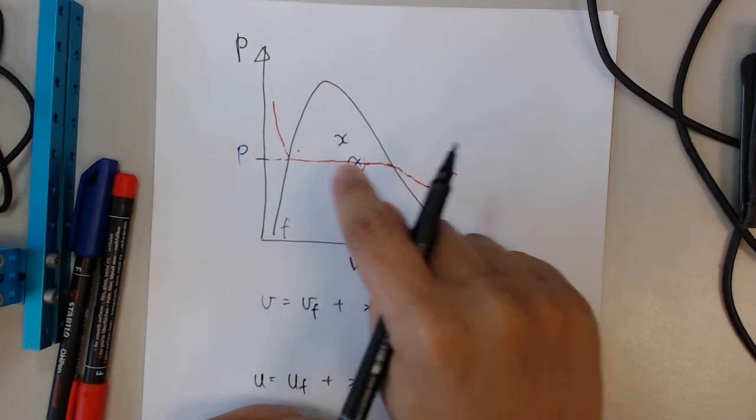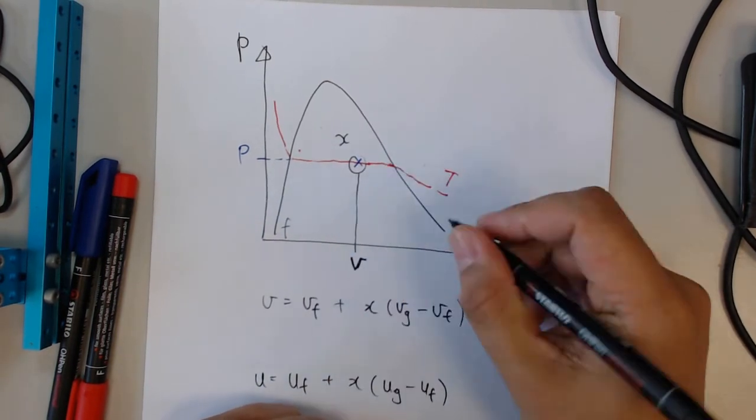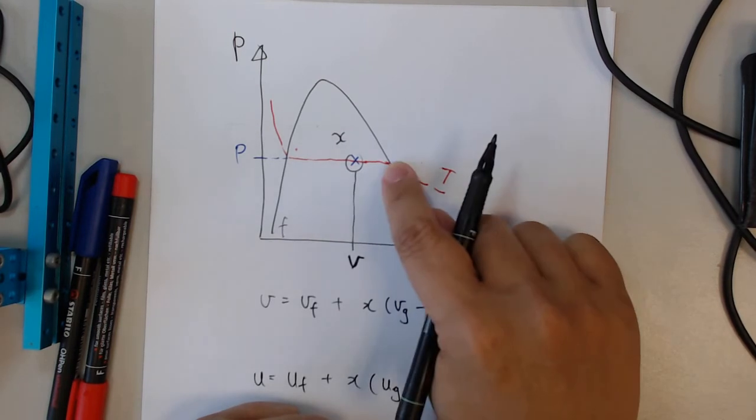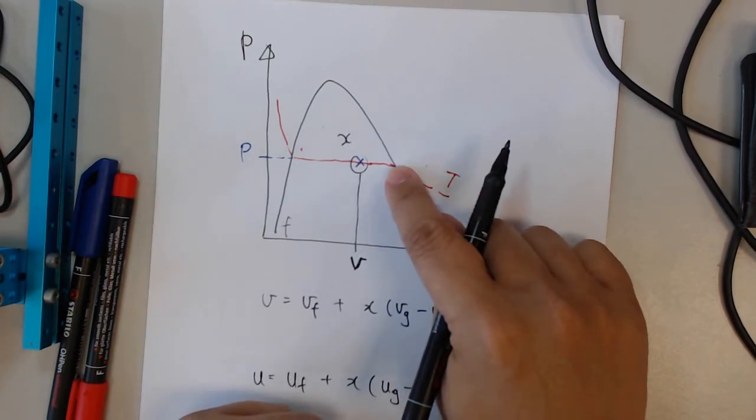Or if your state is over here at the right side, you are at the saturated dry steam line, you are at the G line.